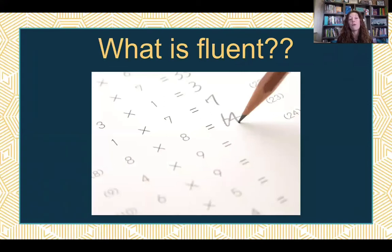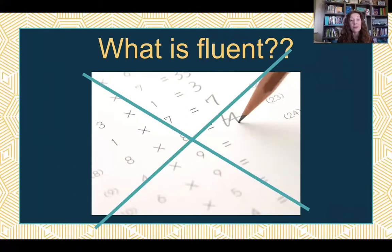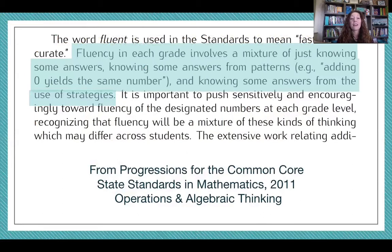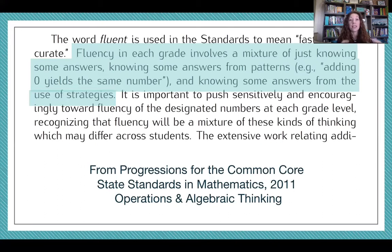I want to talk for just a minute about what fluency is. A kid who is fluent is not determined by how many answers they get right on a timed test. That is not fluency, and the research backs me up — it's not just my opinion. In the Common Core standards progression documents, the expectation is that yes, kids need to be fast and accurate, but it involves a mixture of just knowing some answers, knowing some answers by using patterns, and knowing some answers through the use of strategy. So even if your standard doesn't specifically say strategies, it's implied by what they mean by fluency.